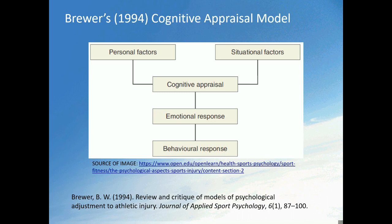Brewer's 1994 cognitive appraisal model, shown on screen now, suggests that how an individual appraises their injury — their cognitive appraisal — is influenced by two variables: personal factors and situational factors. Personal factors include things such as personality, age, and previous experiences of injury. Situational factors include things like the stage of the competitive year and social influences such as the coach's or teammates' reaction to an injury.